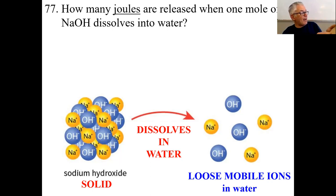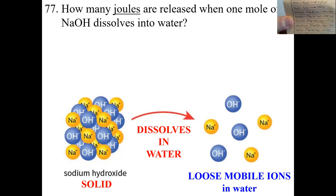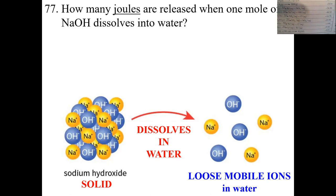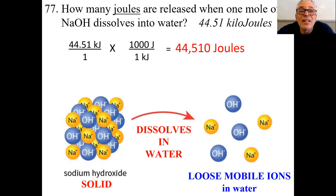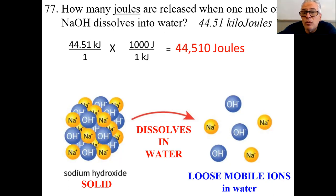What do you look up on Table I? Right near the bottom, sodium hydroxide goes into water forming sodium ions and hydroxide ions, and it has a delta H of negative 44.51 kilojoules. So there's the answer: 44.51 kilojoules. The question says how many joules, so to convert this, we put 44.51 kilojoules over one, and remember there are 1,000 joules in a kilojoule. Kilojoules cancel due to multiplication, and the answer comes out.